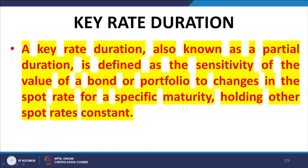These are two fundamental assumptions in the duration measure, which we now try to relax. When we talk about key rate duration, we identify certain special rates which are more relevant or which have greater influence on the price volatility of the bond. For example, we may believe the bond is particularly susceptible to changes in the 5-year rate, the 8-year rate, or the 10-year rate.